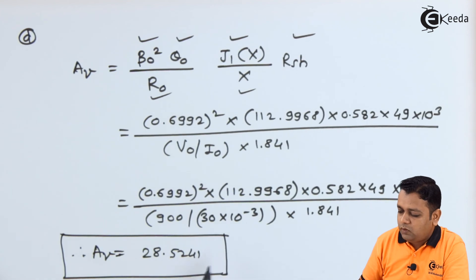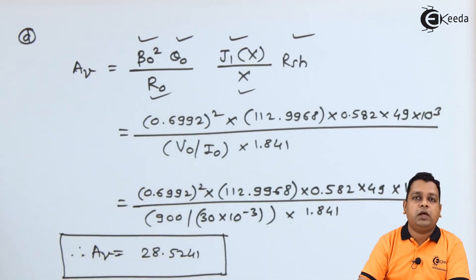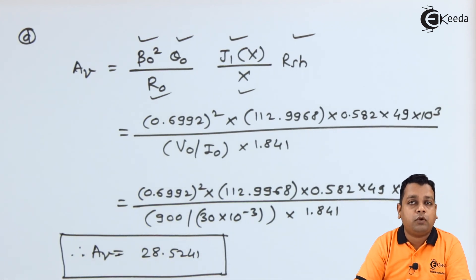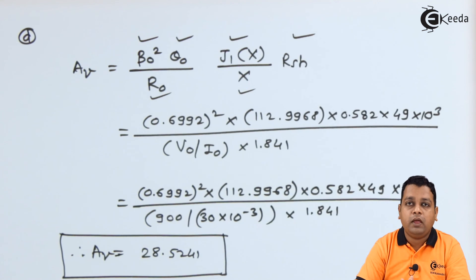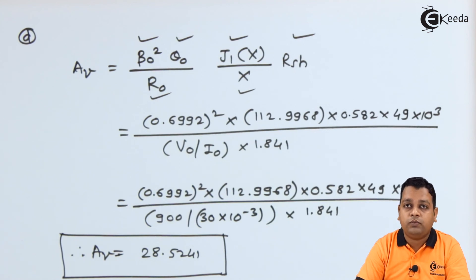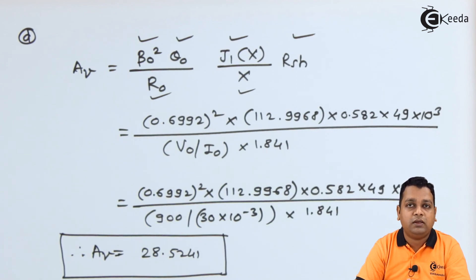So this is the required value. With this value we are now covered with problem 3 based on the understandings of 2-cavity klystron working as amplifier. By the next lecture we shall be taking the last problem based on this very popular microwave device, the 2-cavity klystron. I hope you understand these problems and gain this particular knowledge. For more information you can subscribe to Ekeda channel. Thank you.